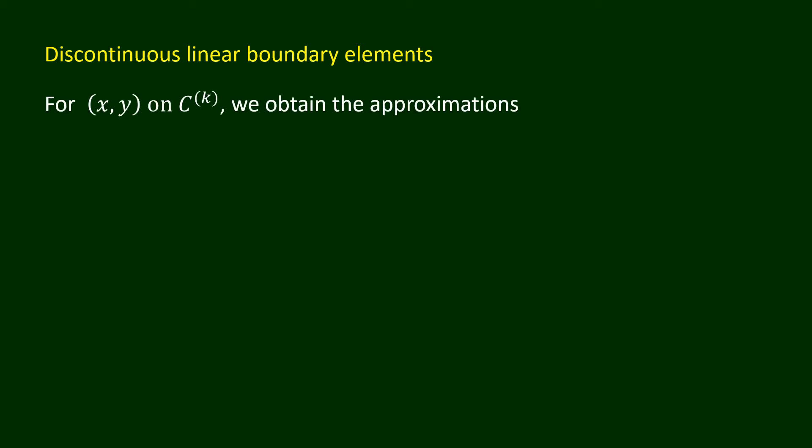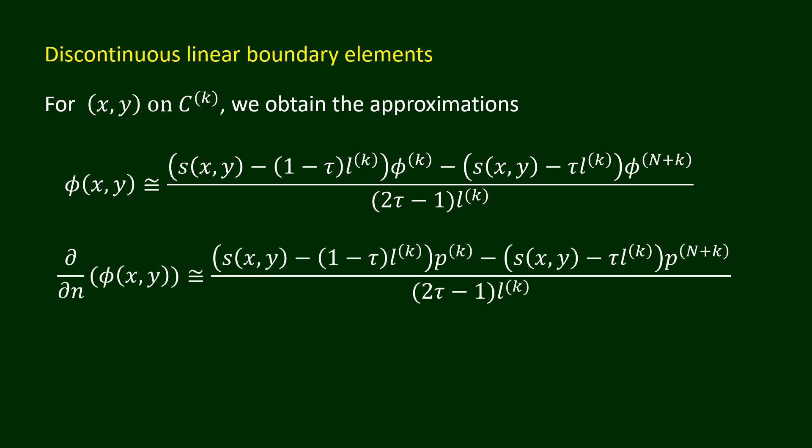Here are the approximations for phi and del phi over del n for point (x,y) on ck. In these approximations, we assume that phi and del phi over del n vary continuously over the element ck. However, the approximations allow for the possibility that phi and del phi over del n may not be continuous from one element to another. As phi and del phi over del n vary linearly with the distance along an element and are not forced to be continuous from one element to another, we describe such approximations using the term discontinuous linear boundary element approximations.